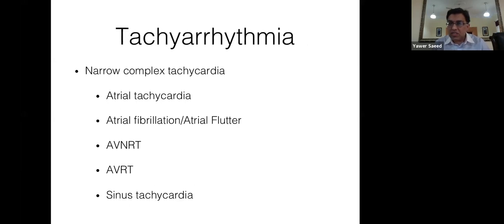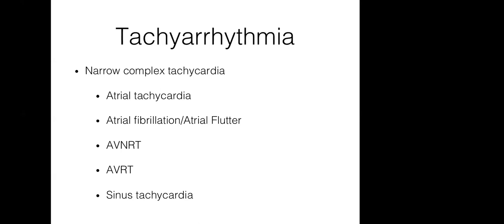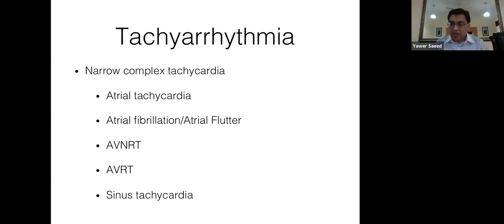For tachyarrhythmias, when you see an ECG, determine if it's narrow complex or broad complex tachycardia. Narrow complex tachycardia differentials are: atrial tachycardia, atrial fibrillation, atrial flutter, AVNRT, AVRT, or sinus tachycardia — heart rate more than 100 beats per minute. Narrow complex tachycardia usually gives you time to act, think, and manage.